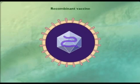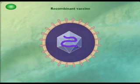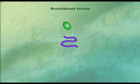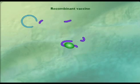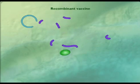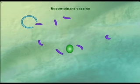Another form of subunit vaccine is called a recombinant vaccine. In these vaccines, the gene for an antigen from a pathogen is placed into a host microorganism. The host then makes many copies of the antigen.